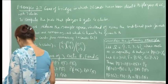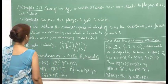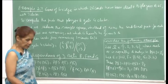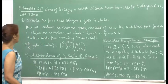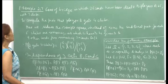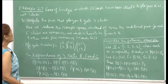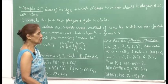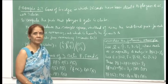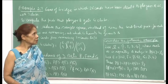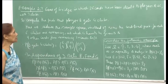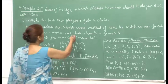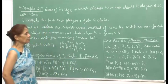Let me fill up a few gaps from the last lecture. For example, I had discussed this card game bridge. There was example number 2.7, talking about a game of bridge in which 26 cards have been dealt to players A and C, with 7 clubs. We wanted to compute the probability that player B gets 4 clubs.